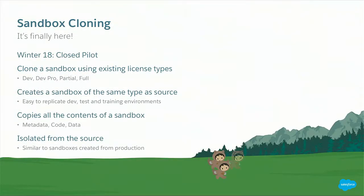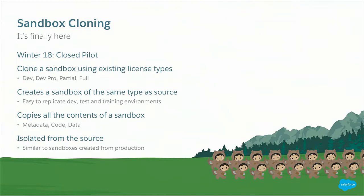So how does sandbox cloning work? Sandbox cloning is in close pilot in Winter '18. When you clone a sandbox, you don't need any new license types — it uses the same license types that you have today. You can use your developer, developer pro, partial, and full licenses to create a clone. Cloning a sandbox creates a replica of the sandbox you are cloning. So a developer sandbox when cloned will create a developer sandbox; a partial will create a partial; a full will create a full sandbox. All the contents of a sandbox, including any customizations you may have made to your schema and any sample data, all get copied over as part of the clone.